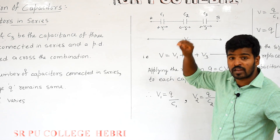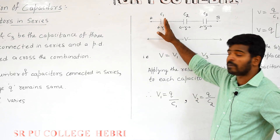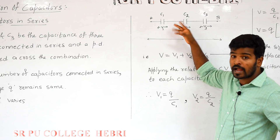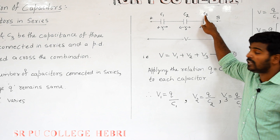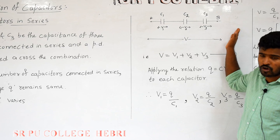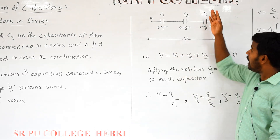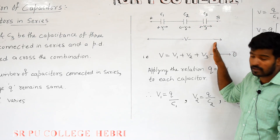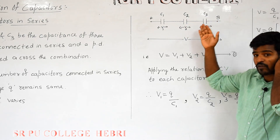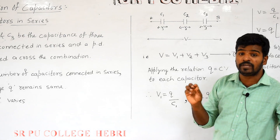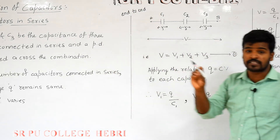That connection is said to be an end-to-end connection. The right side of capacitor C1 is connected to the left side of capacitor C2, and again the right side of capacitor C2 is connected to the left side of capacitor C3, and this continues. The left side of the first capacitor is connected to an external potential V, and the right side of capacitor C3 is also connected to the external supply.